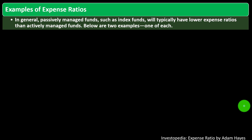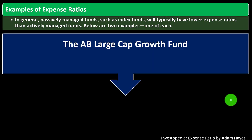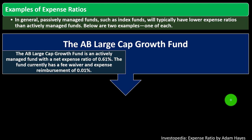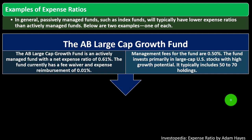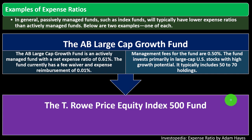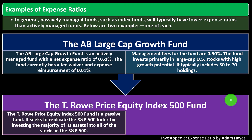Here are two examples — one actively managed and one passive. The AB Large Cap Growth Fund is an actively managed fund with a net expense ratio of 0.61%. The fund currently has a fee waiver and expense reimbursement of 0.01%, and management fees of 0.5%. The fund invests primarily in large-cap U.S. stocks with high growth potential and typically includes 50 to 70 holdings.